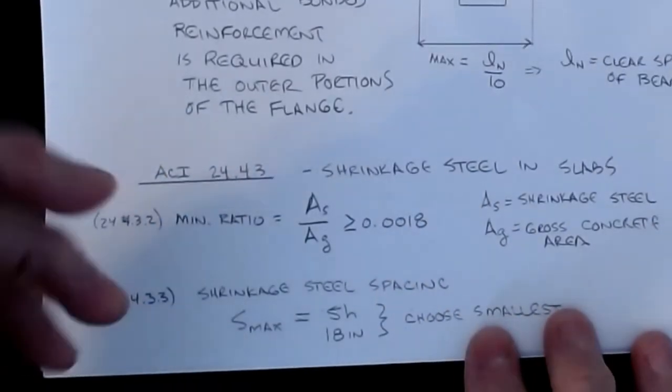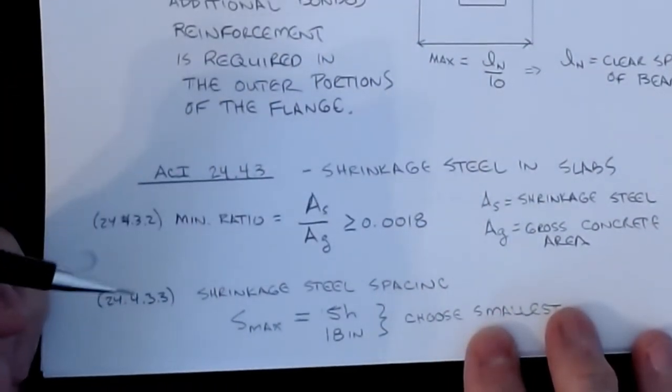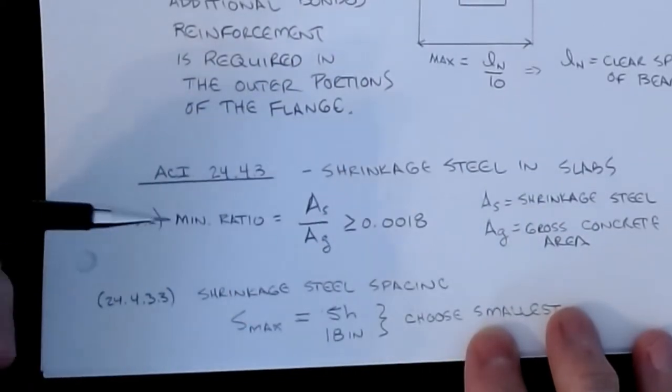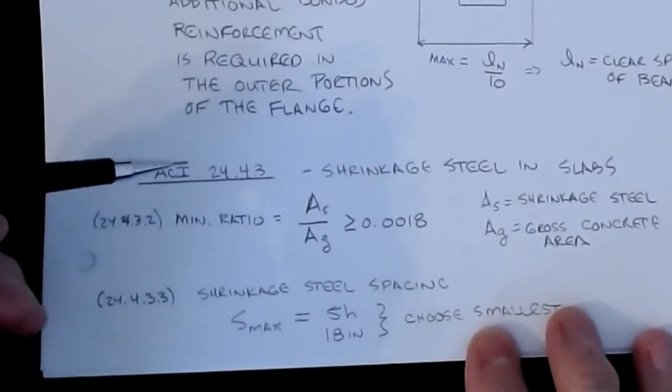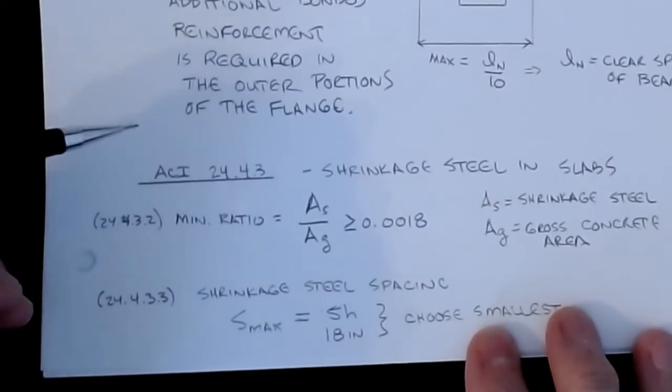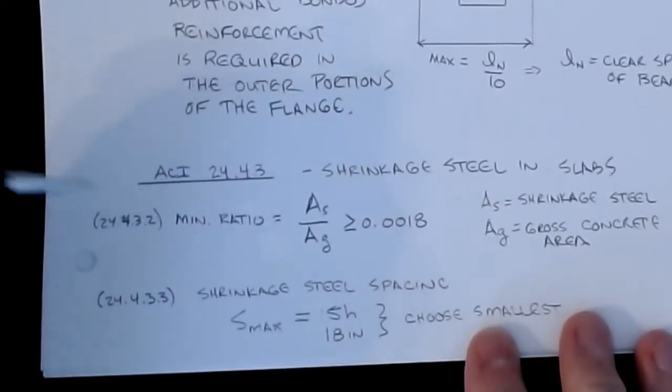If that limit, LN over 10, is greater than the B effective, then the additional bonded reinforcement is required in the outer portions of the flange. You have to keep adding more until you account for basically getting steel distributed over the entire effective length, or the effective flange width. Because remember in T-beams, when we calculated it, your beam may have actually been something considerably larger, but we limit it to B effective, and then they say that you have to spread this steel such that if LN over 10 is some value that is less than B effective, then you have to make sure that you would distribute this steel over the entire effective width.